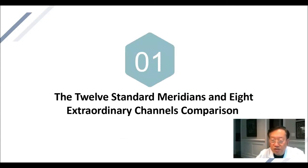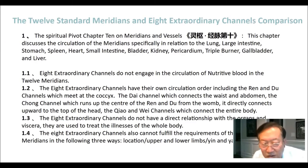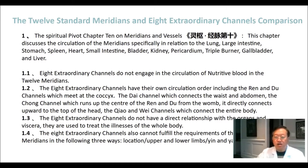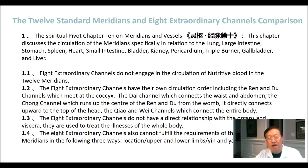Part 1: The 12 standard meridians and 8 extraordinary channel comparison. The Spiritual Pivot Chapter 10 on meridians and vessels discusses the circulation of the meridians, specifically in relation to the lung, large intestine, stomach, spleen, heart, small intestine, bladder, kidney, pericardium, triple burner, gallbladder, and liver. The 8 extraordinary channels do not engage in the circulation of nutritive blood in the 12 meridians.